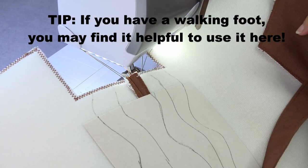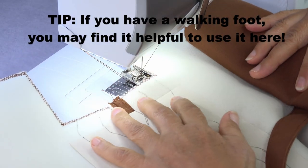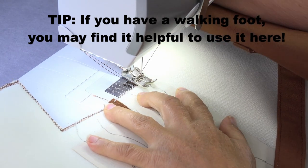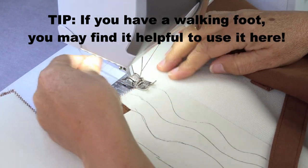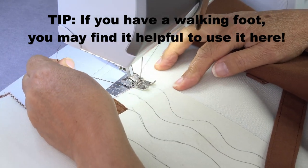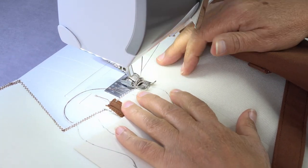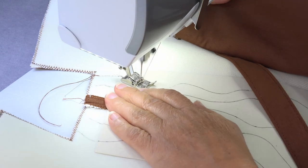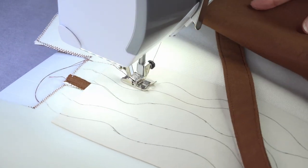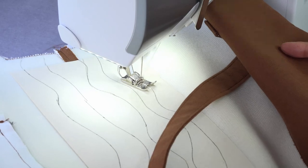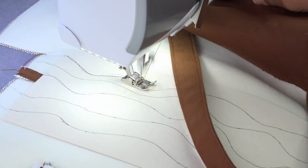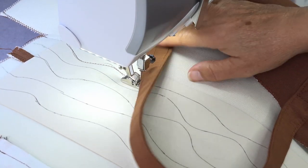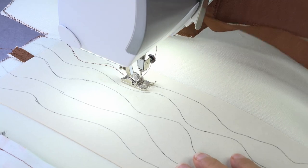I'm just going to use a stitch length of 3.1 and I'm just going to stitch roughly on my lines. If I don't get them exactly right it doesn't really matter, just giving me a rough guide of where I'm going to stitch. As you can see I'm not really following those lines.